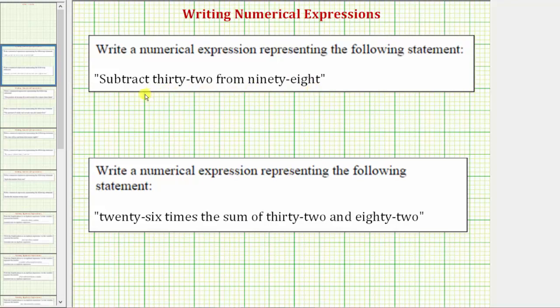Because the statement is subtract 32 from 98, we begin with 98 and then we subtract 32. 98 minus 32 is the expression for subtract 32 from 98. And the order of this difference is important.